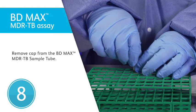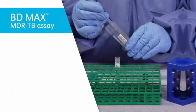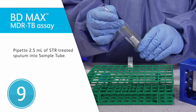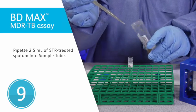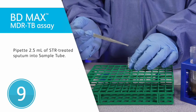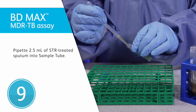Remove the cap from the BD-MAX MDR-TB sample tube. Using the pipette supplied, transfer 2.5 milliliters of the STR treated sputum sample to a labeled BD-MAX MDR-TB sample tube. Double check that the sample ID on the BD-MAX MDR-TB sample tube matches the label on the collection container.